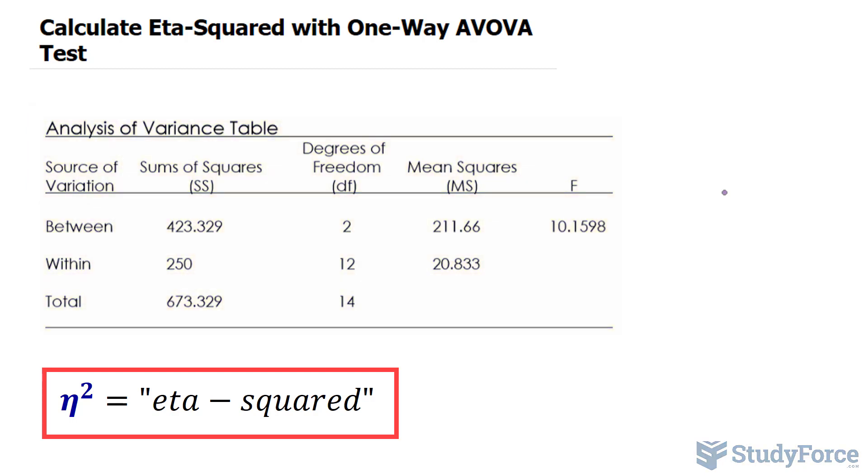This is where eta squared comes in. If an ANOVA test is performed and it has been established that a significant difference in means exist, we then want to figure out how much variation in the data is due to the treatments.